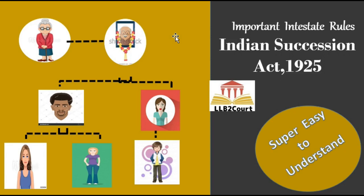For Hindus we have the Hindu Succession Act, for Muslims we have personal laws. Similarly, for Christians and Parsis we have the Indian Succession Act 1925. Today we will see the intestate rules for Indian Christians as mentioned in the Indian Succession Act 1925.